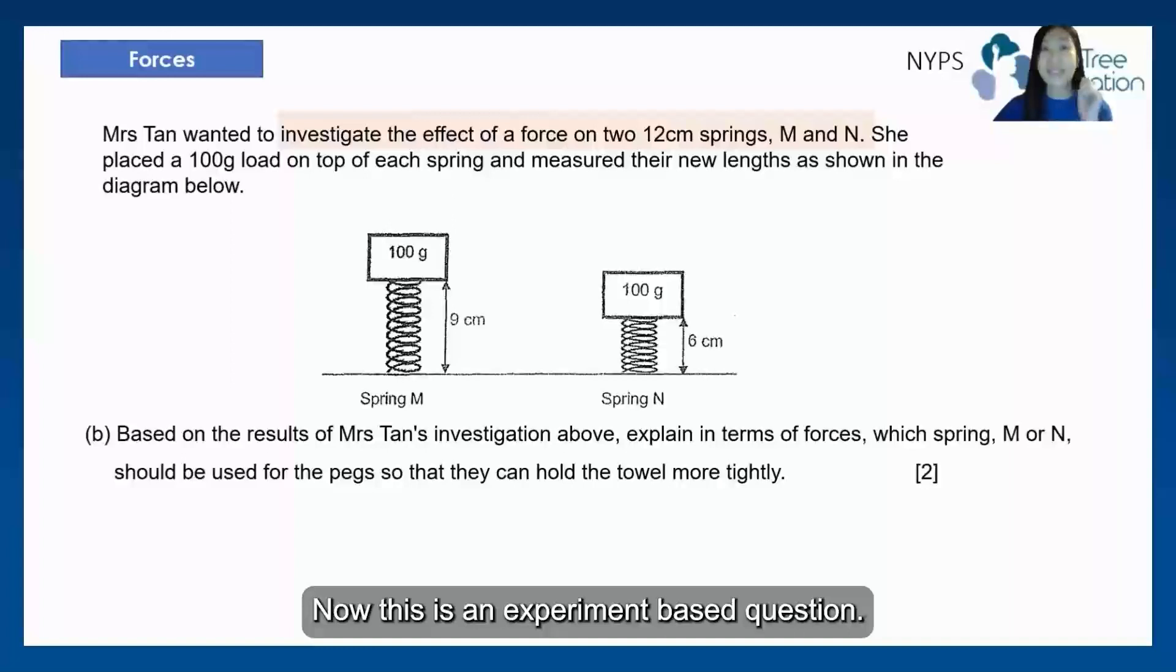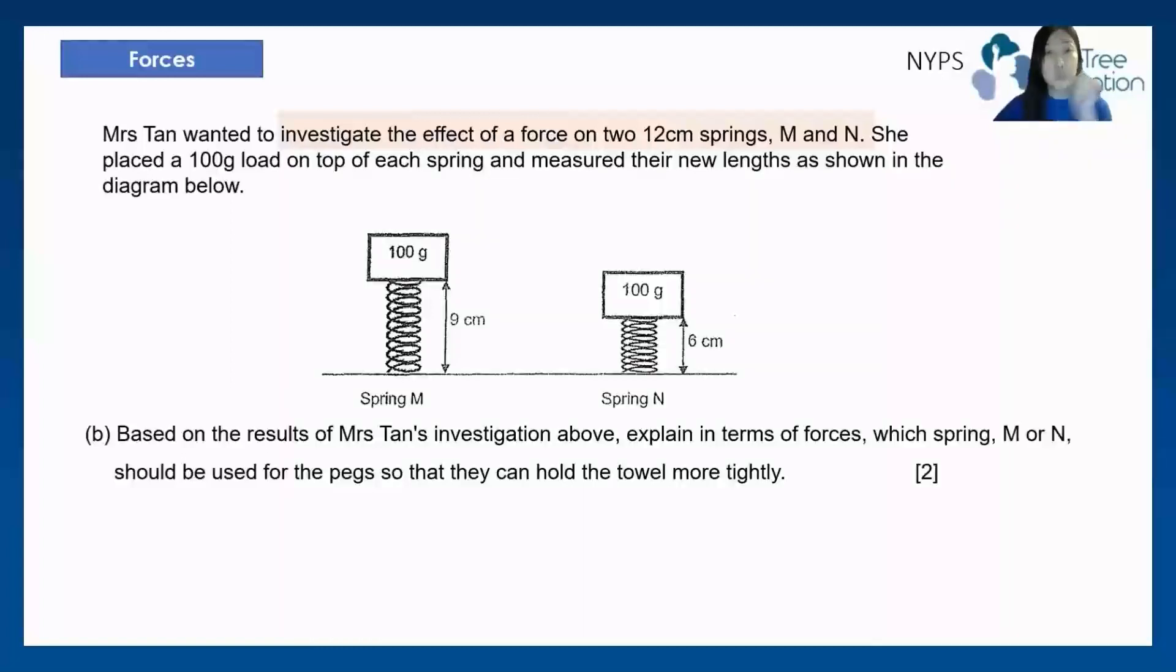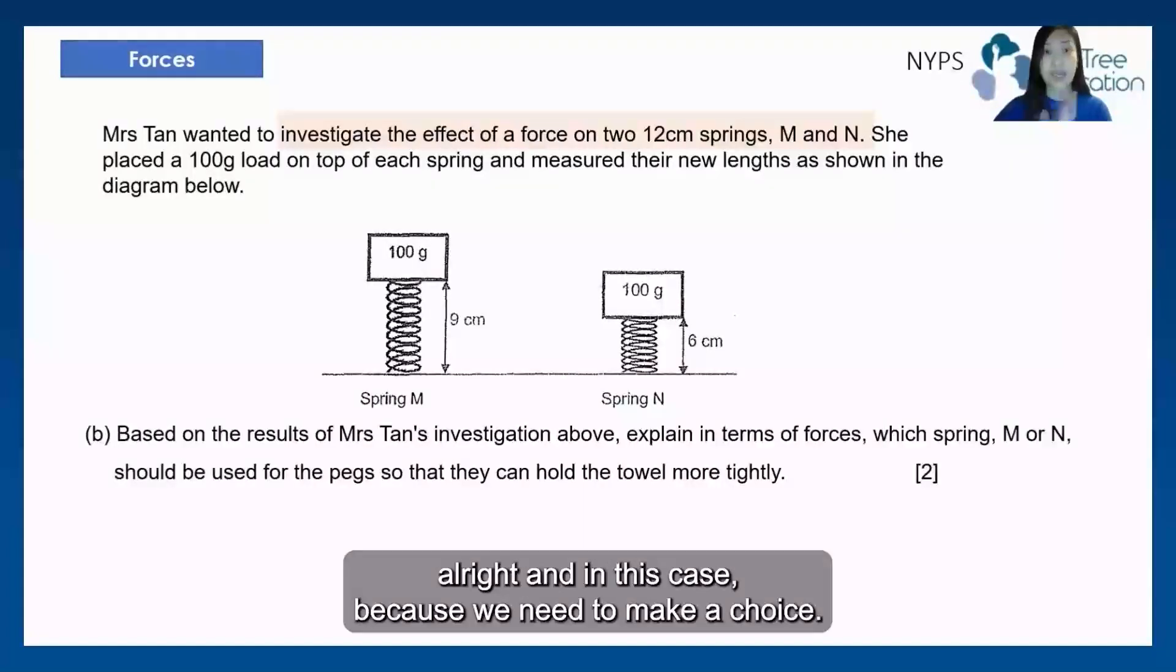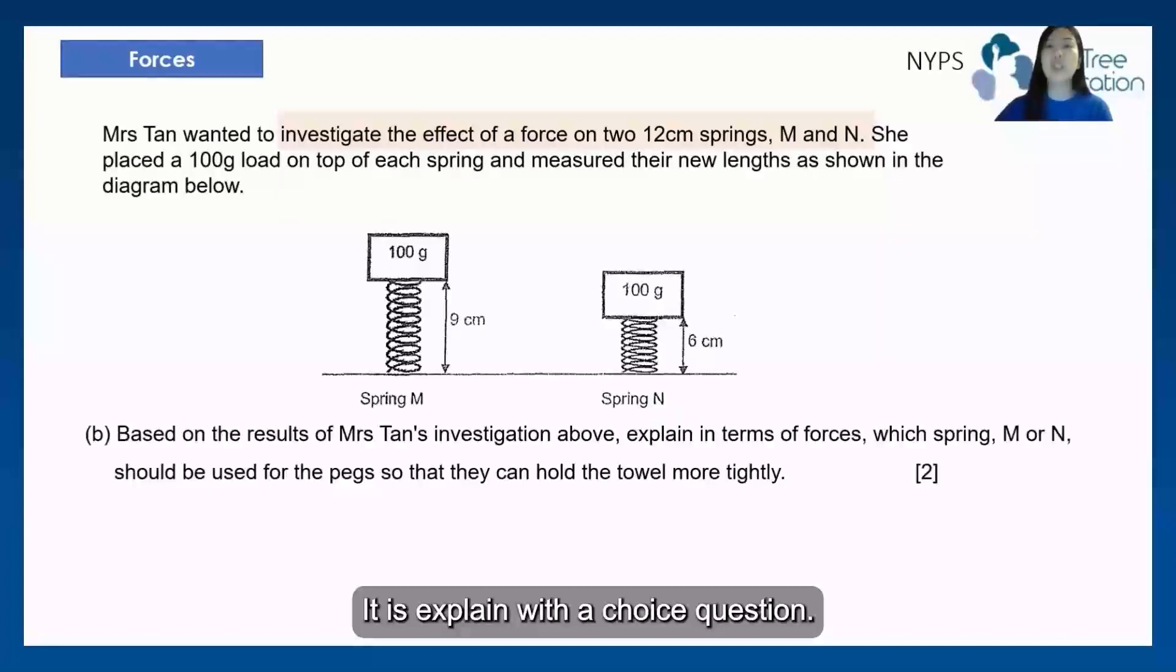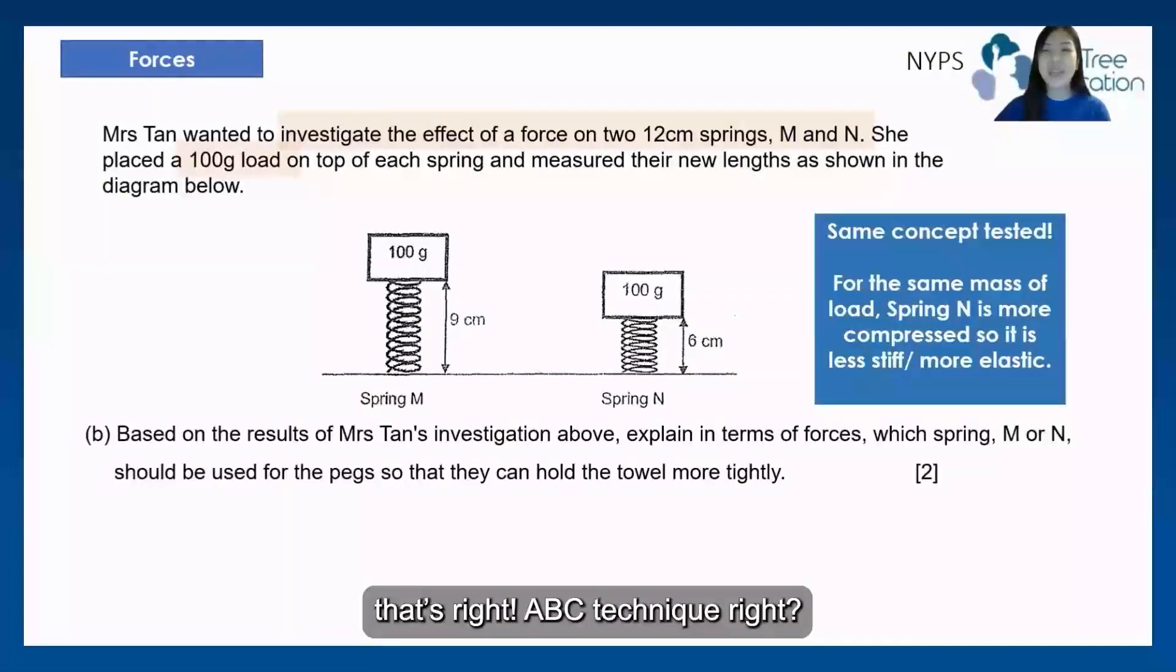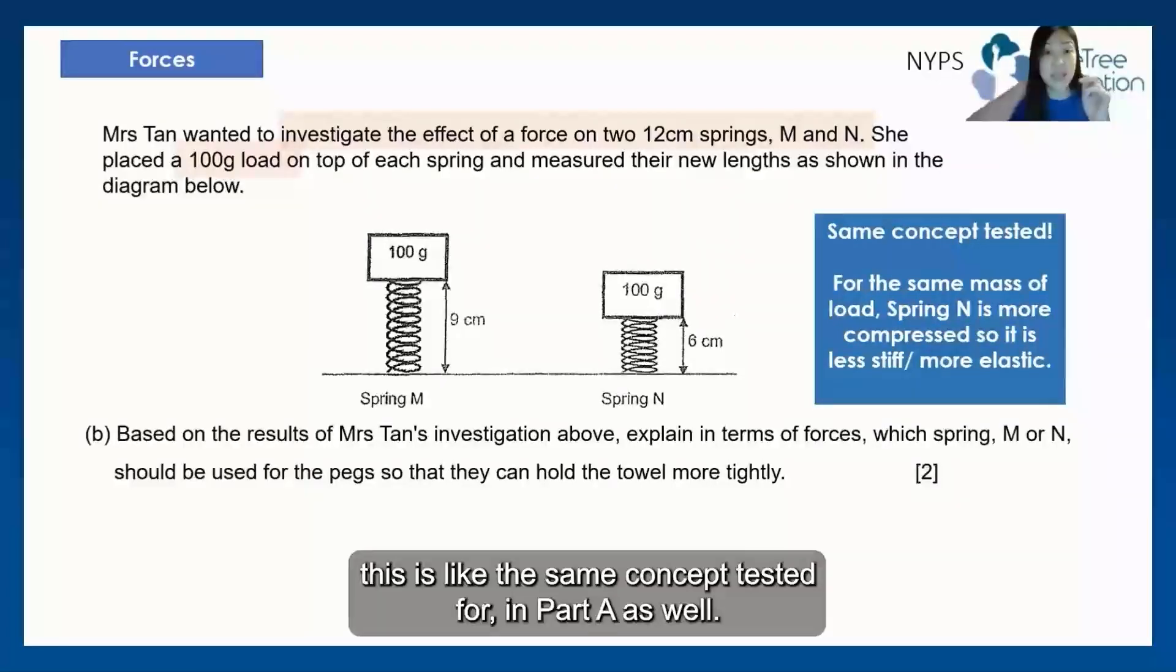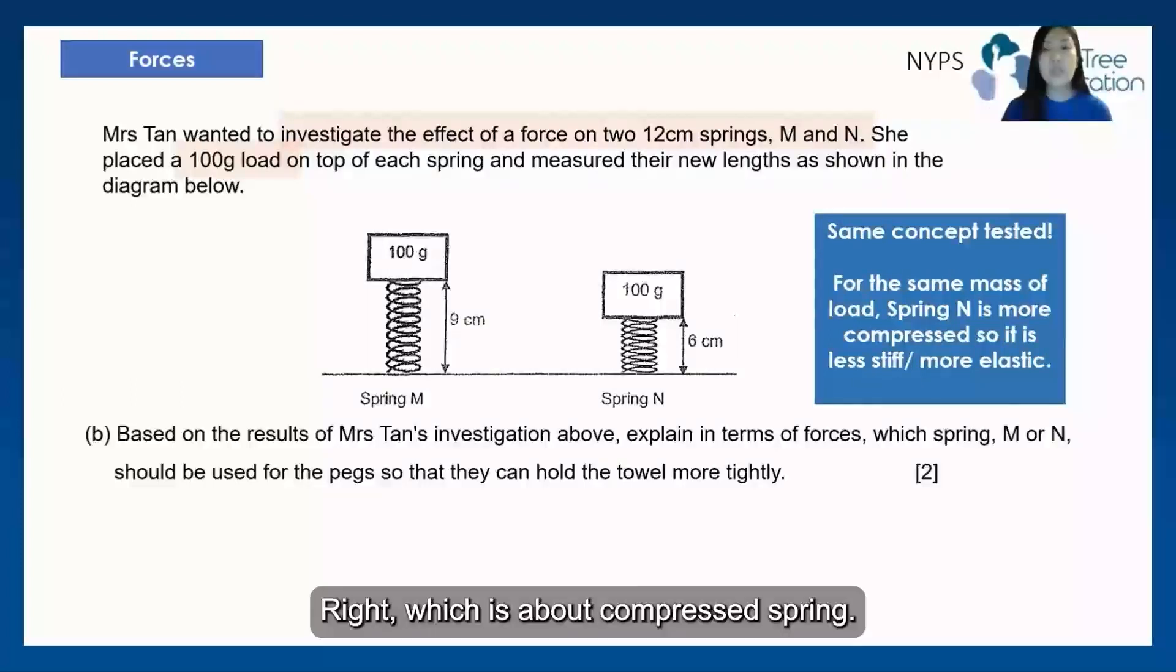Now, this is an experiment-based question. Do not use your knowledge to answer this, but use the results. And in this case, because we need to make a choice, it's an explain with a choice question. We can use our, that's right, ABC technique. So when we look at the diagram, we can see that this is like the same concept tested for in part A as well, which is about compressed spring.